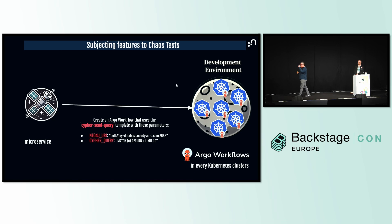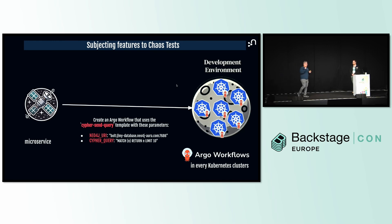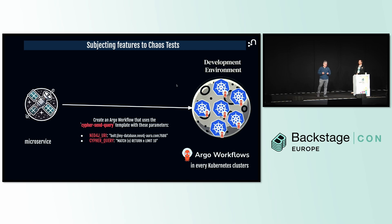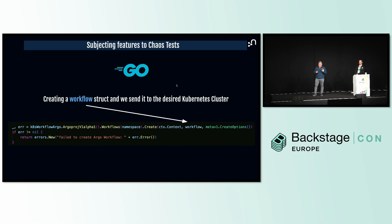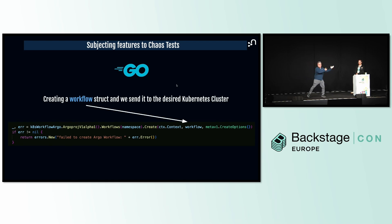If we were only working with one single Kubernetes cluster, that would be the end of the story. But because we're using over a thousand Kubernetes clusters, we also decided to build a very lightweight and efficient Go microservice with only one responsibility: you send it a POST request in the form of JSON, defining what Argo workflow template you want to run and providing the parameters — in this case the Bolt URL of the Neo4j database and the Cypher query or queries. The implementation is really lightweight. We're using the openly available SDK, and you're saying: in this namespace, create this workflow — the workflow being a Go struct. Whatever the request contains will be put into this struct and created in the relevant Kubernetes cluster.